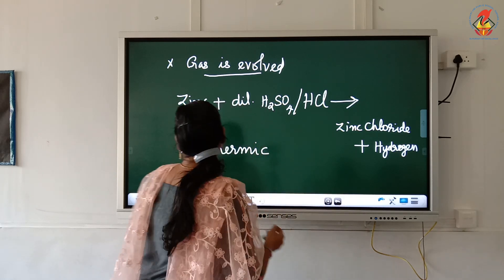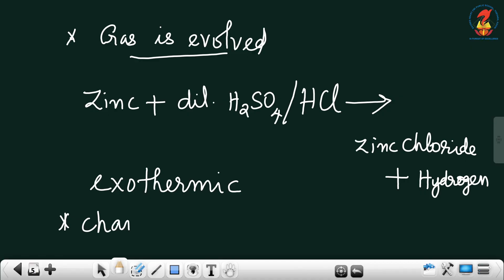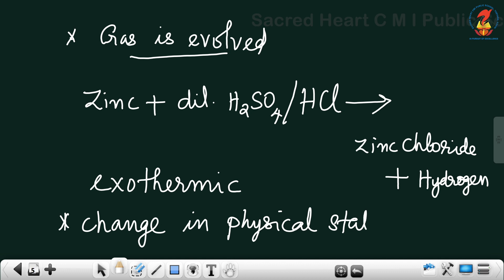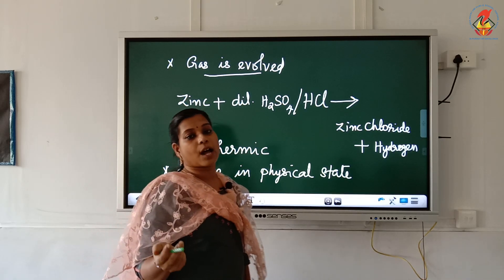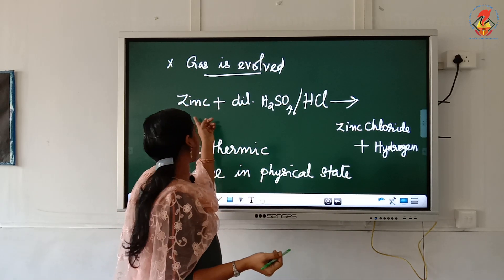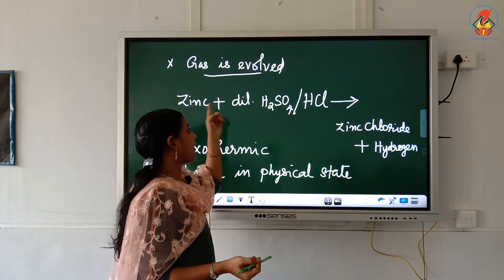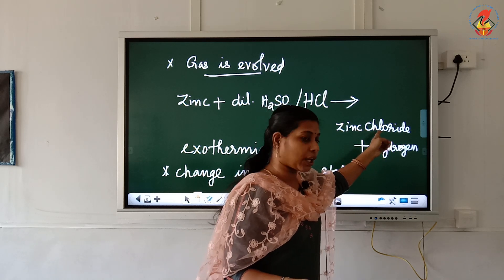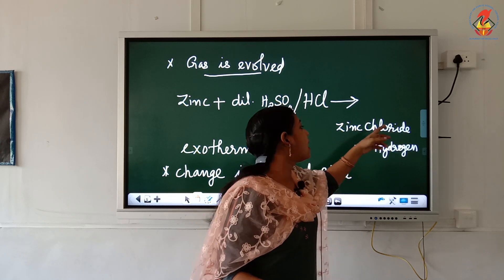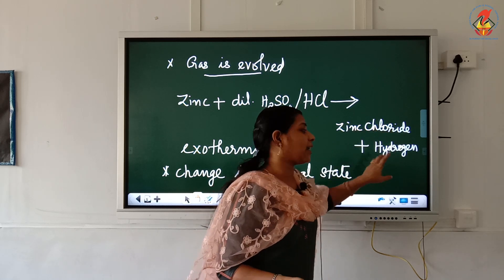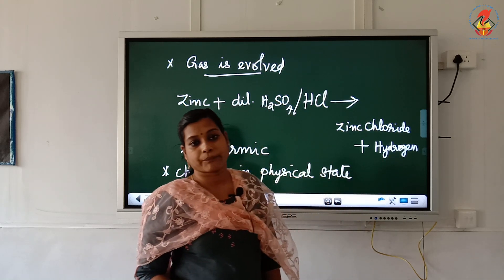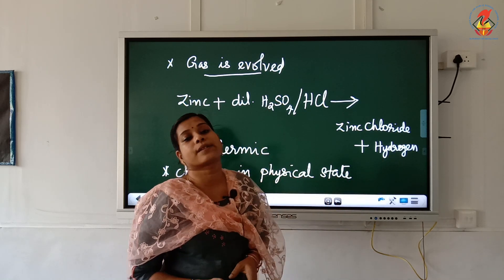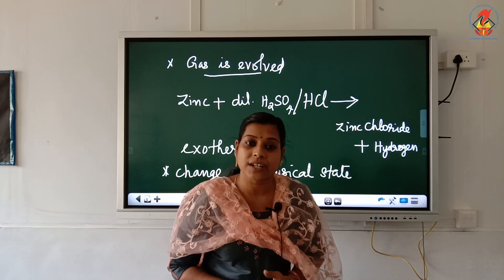Another case is change in physical state. Physical state means the appearance as solid, liquid, or gas. In the zinc and acid reaction, zinc is solid, the acid is liquid, zinc chloride is soluble and obtained as a liquid, and hydrogen is in gaseous form. So the physical state also changes when a chemical reaction is happening.